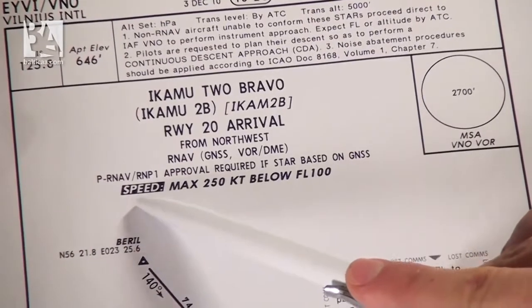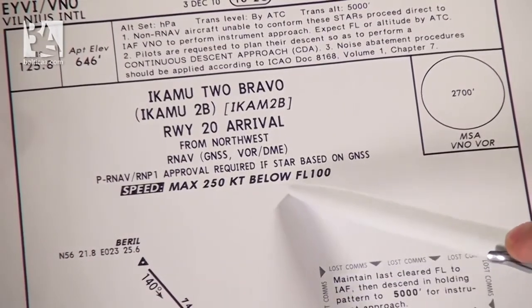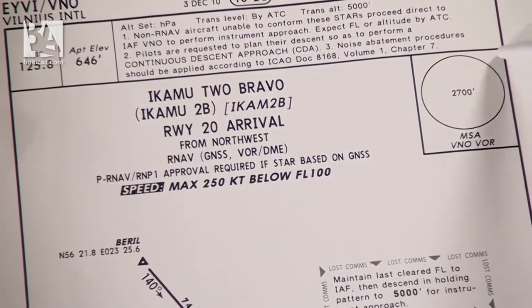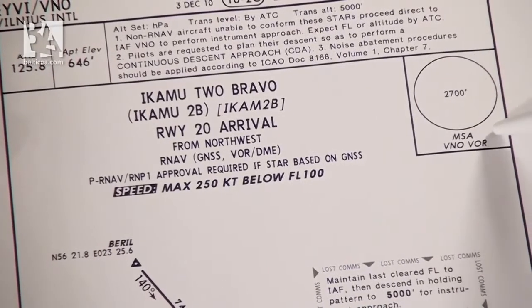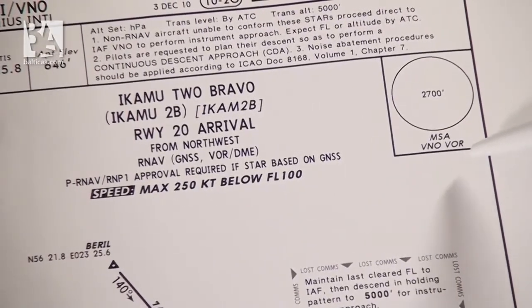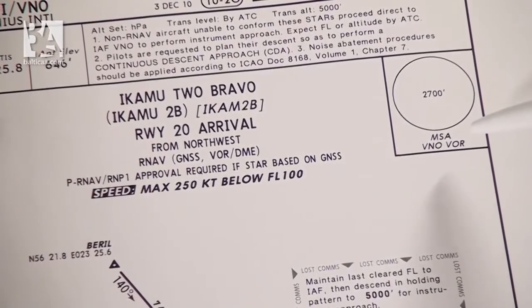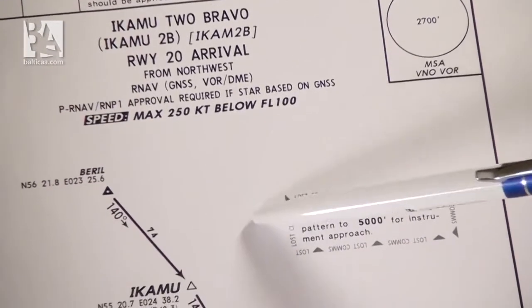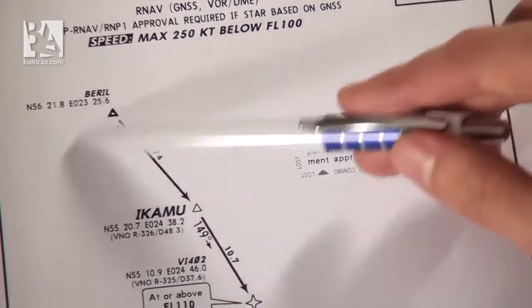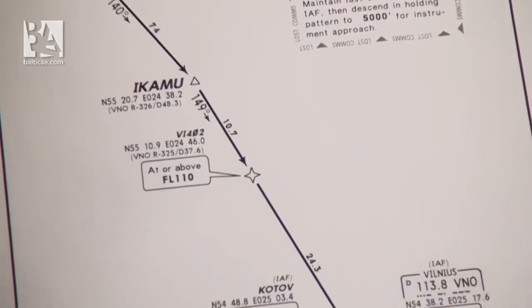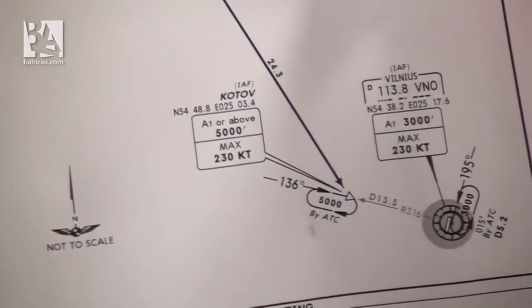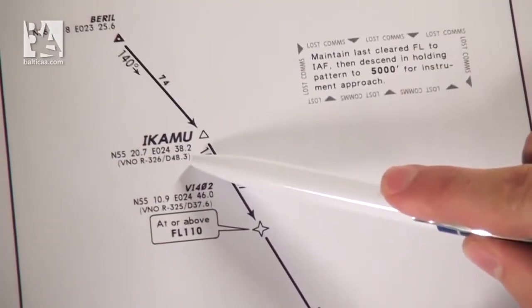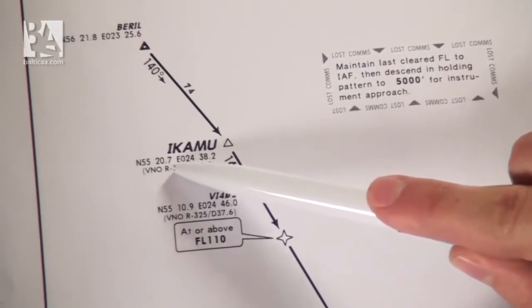Below this we see a speed restriction of 250 knots below flight level 100, or 10,000 feet. To the right we have the minimum safe altitude — the minimum altitude we should ever descend to except for the arrival or landing itself — with the center point Victor November Oscar VOR. Below that we have the routing map. We start at ICAMU, with the radio and distance from Victor November Oscar and the coordinates for this waypoint.